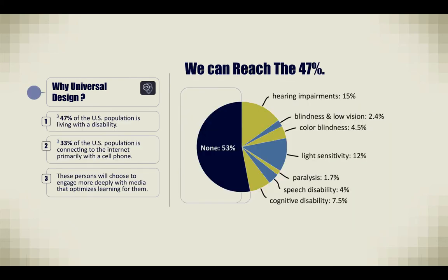Why universal design? We can reach the 47%. 47% of the U.S. population is living with a disability. 33% of the U.S. population is connecting to the internet primarily with a cell phone. These persons will choose to engage more deeply with media that optimizes learning for them.